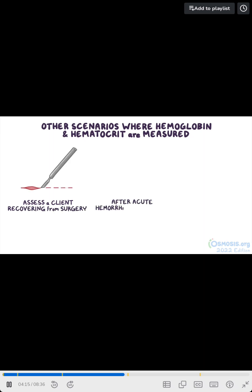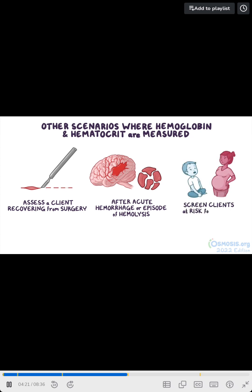Additionally, there are other scenarios where hemoglobin and hematocrit are measured. It can be used to assess a client recovering from surgery, as well as after an acute hemorrhage or episode of hemolysis. Finally, hemoglobin and hematocrit are measured to screen clients who are at risk for anemia.